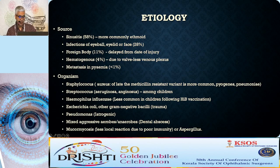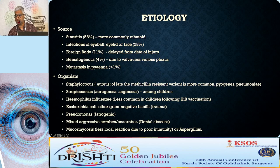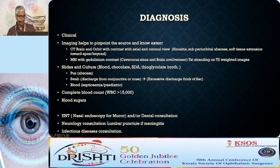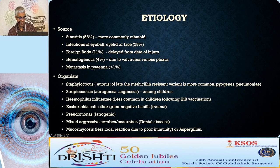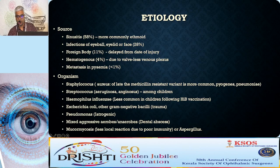Etiology: the source is most often the sinuses, particularly the ethmoid sinus. Infections can also come from the eyeball, eyelid, face, or retained foreign bodies. Spread can be hematogenous via the valveless venous plexus. Organisms most often are Staph or Streptococcus, and nowadays increasingly MRSA. Hemophilus influenzae was more common in children but is now less so due to vaccination. In trauma, gram-negative bacilli may be seen; Pseudomonas and Klebsiella in long-term hospital patients. Dental infections may involve mixed anaerobic-aerobic organisms. In immunocompromised patients, mucormycosis or aspergillosis must be considered.